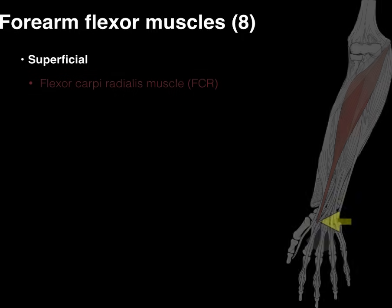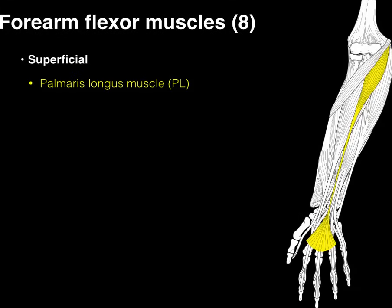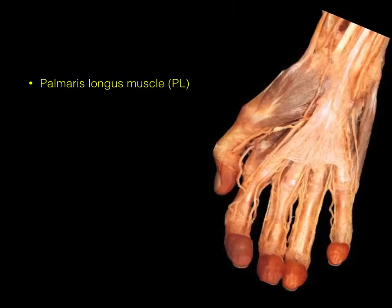The FCR will flex the wrist. Next is the palmaris longus, which also comes from the medial epicondyle. This is an interesting one: the palmaris longus does not insert on a bone — it inserts on the palmar aponeurosis, where it tenses the fascia of the hand. Not everyone has this muscle.